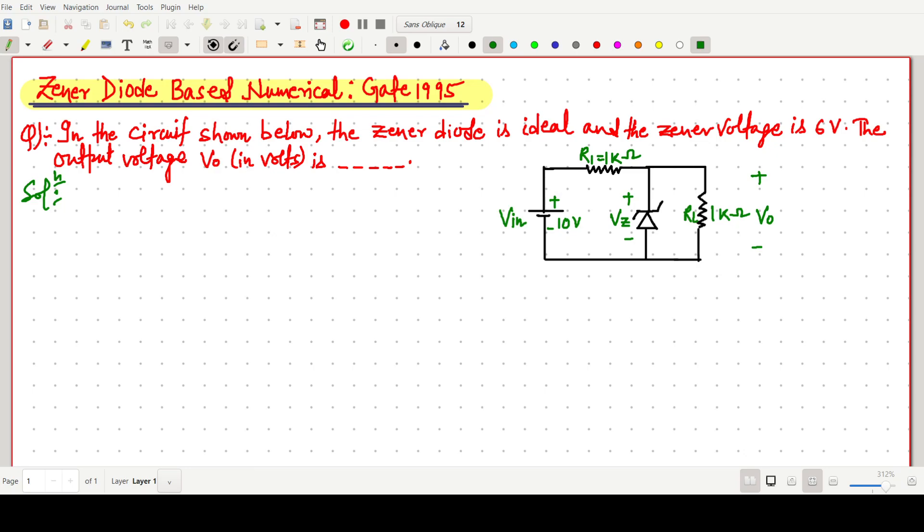we will solve a simple GATE 1995 question which is based on Zener diode. So the question is, in the circuit shown below, this is the circuit. The Zener diode is ideal and the Zener voltage is 6V. So we have to find the output voltage V0. This circuit uses a Zener diode and some resistance with a DC voltage.